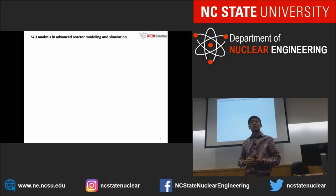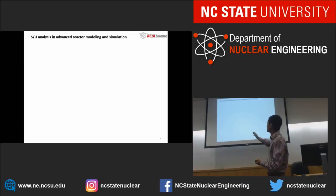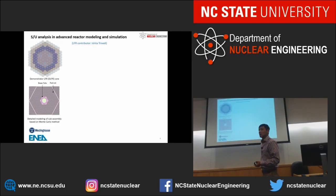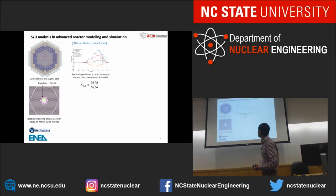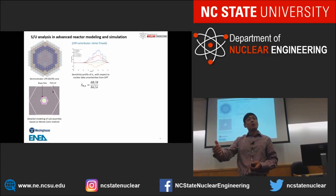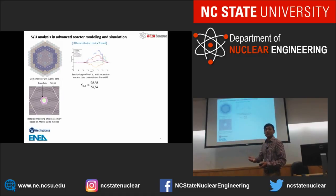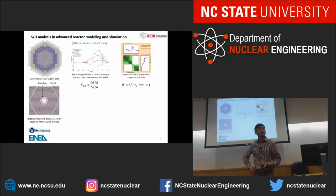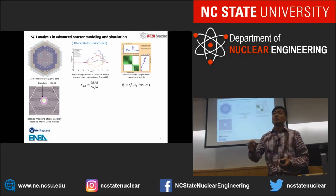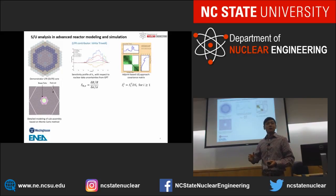We also work on so-called advanced non-light water reactors. One example is that we work on the liquid fast reactor. We use GPT to generate a sensitivity profile with respect to the uncertainty of the nuclear data. We fold it with the uncertainty of the nuclear data, which is usually in the covariance matrix, and we find the uncertainty. Of course, nuclear data uncertainty is just part of it — a very small fraction of all the uncertainties.